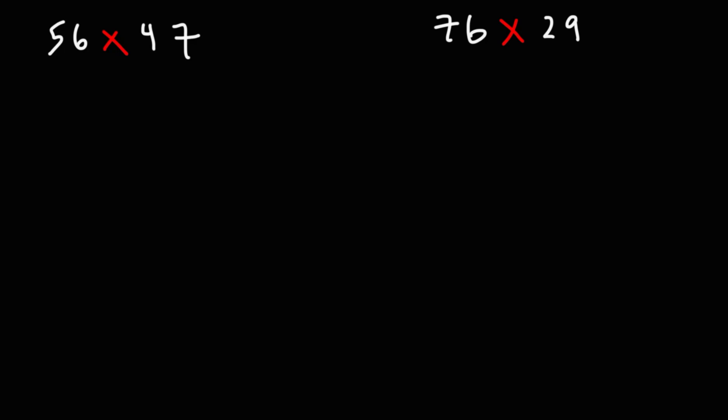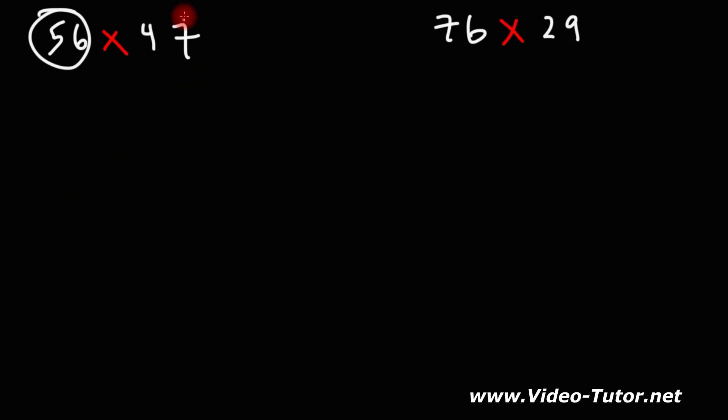In this video we're going to talk about how to multiply two numbers using the box method. For the first example we have 56 times 49. This is a two-digit number and this is a two-digit number, so we need to create a box that's going to have two columns and two rows.